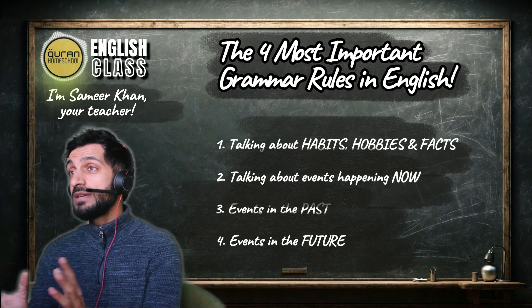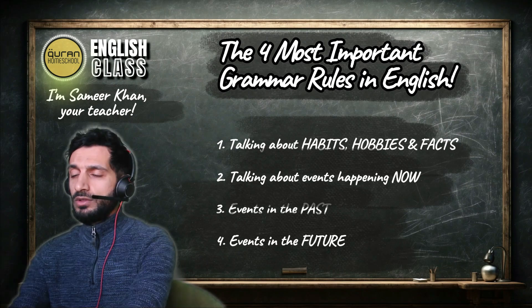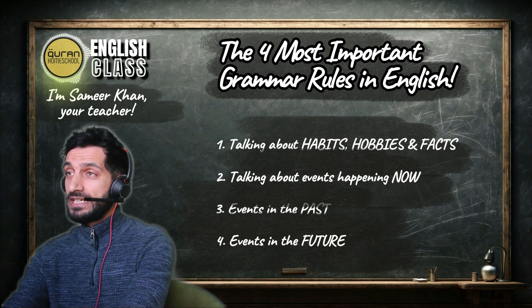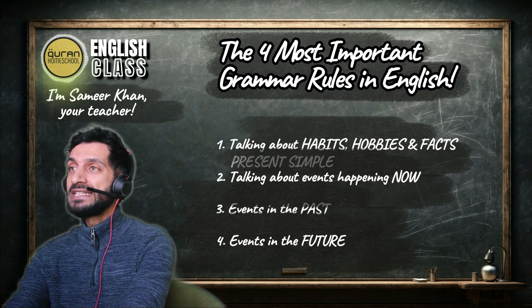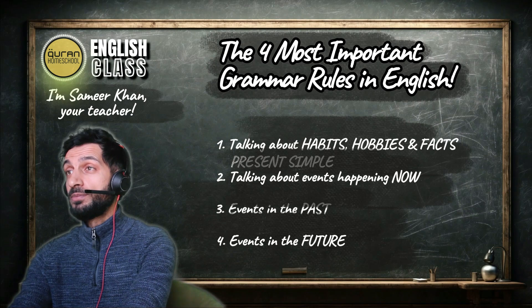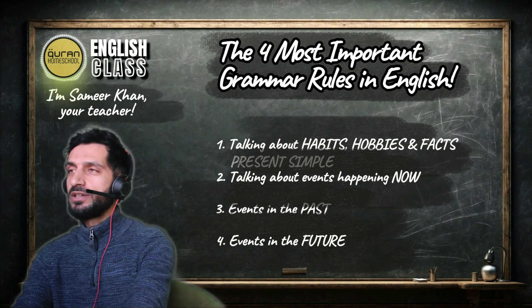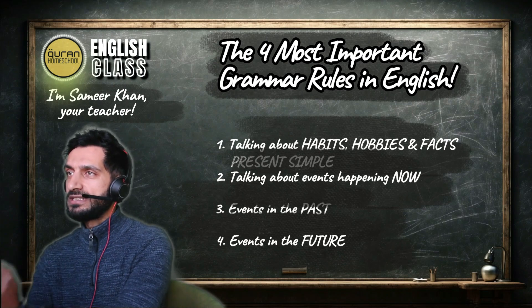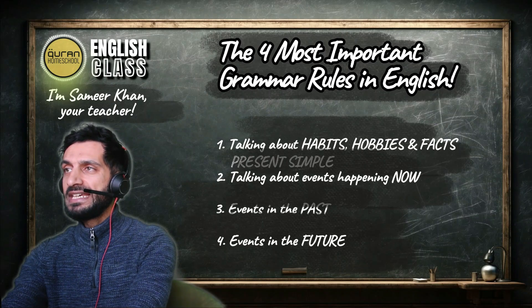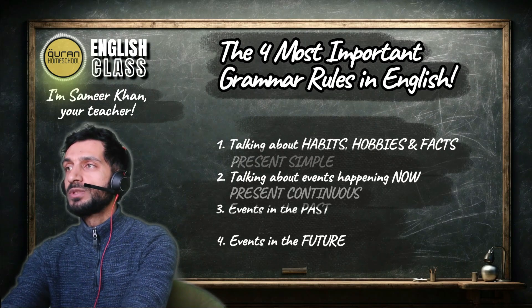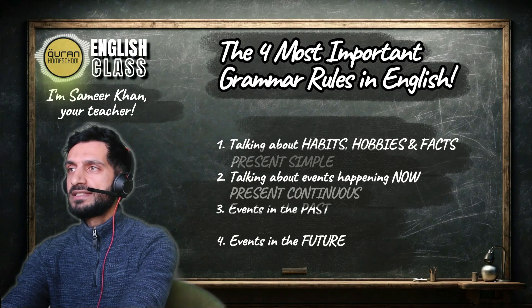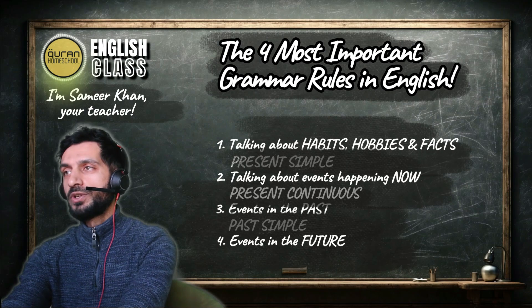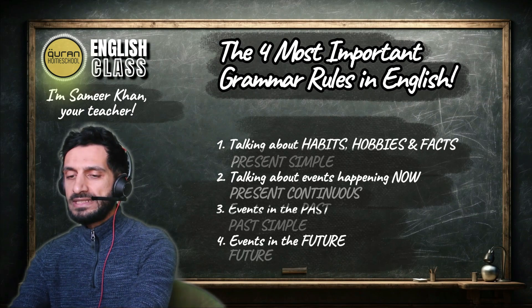In grammar, in English, we have a name for these sentences. Number one — when we talk about habits, hobbies and facts — this is called present simple. The verb is the most important thing for you to focus on. Number two — events happening now — we call this present continuous; it just means now. Number three — events in the past — is past simple. Number four — events in the future — this verb tense is called future.